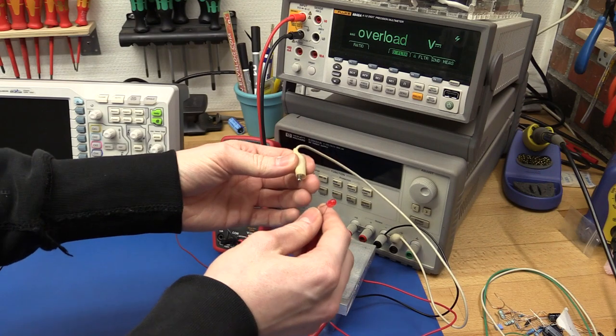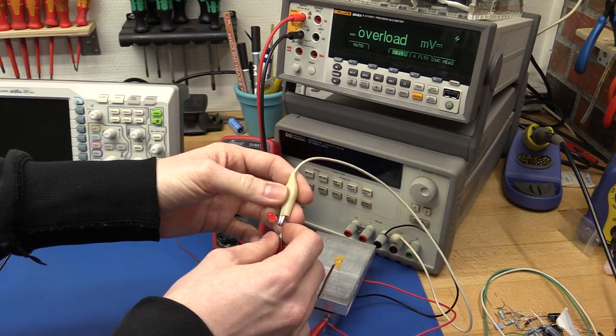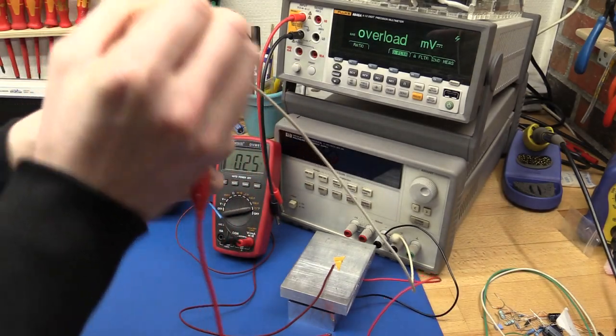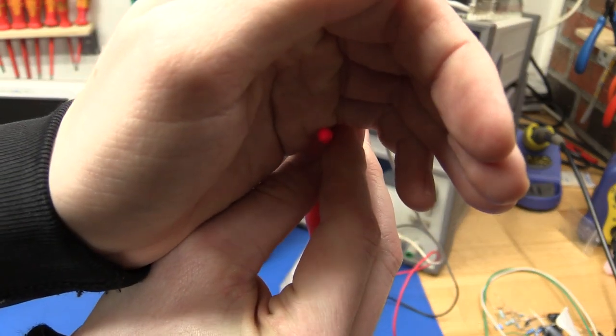Well 1.8 volts should just be enough to light up an LED. And it is... it is lighting up. Very very dim.